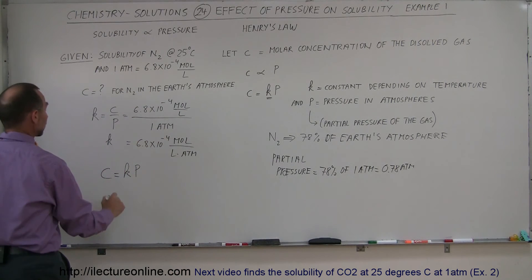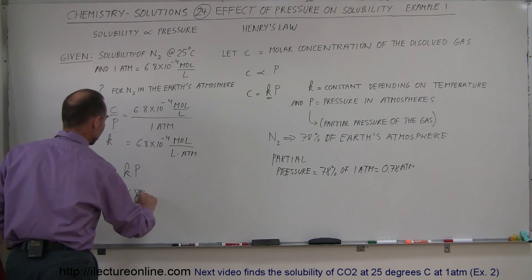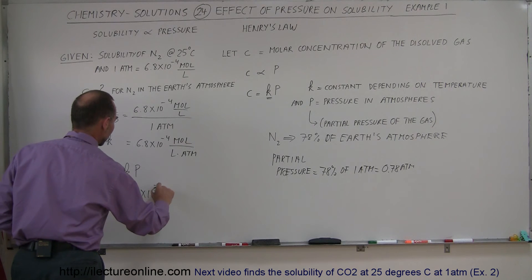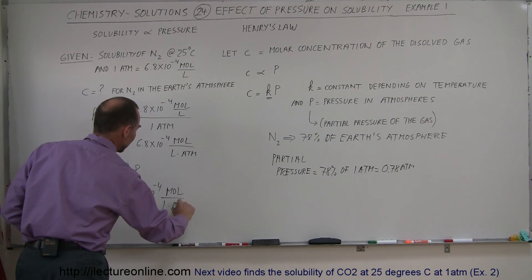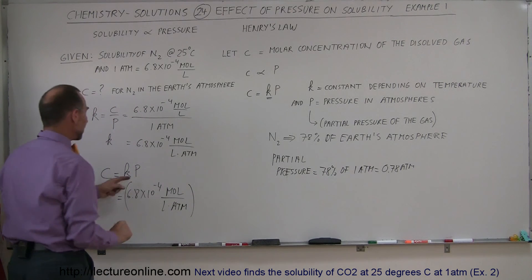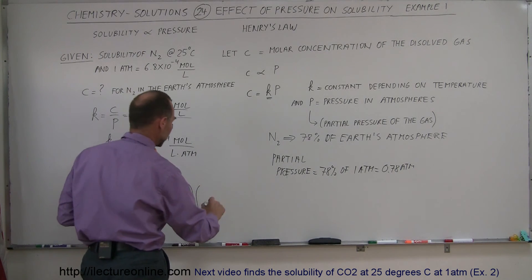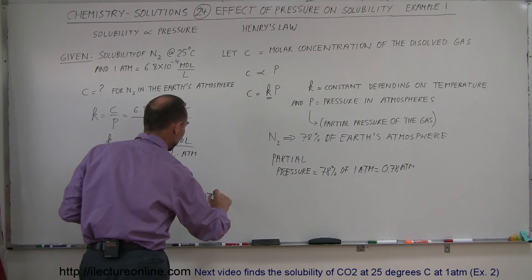We plug that into our equation here. So this is equal to 6.8 times 10 to the minus 4 moles per liter times atm, and we multiply that times the pressure in this particular case, the partial pressure of nitrogen, which is 0.78 atm.